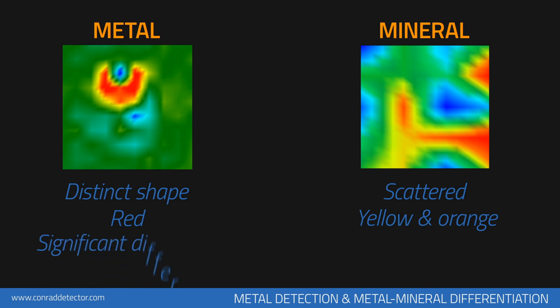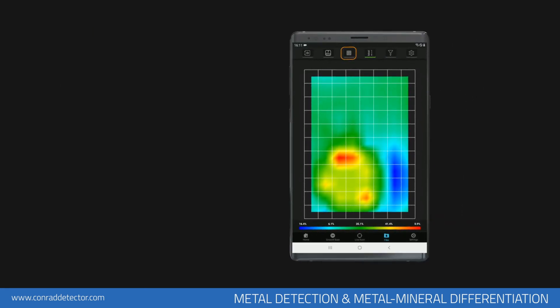The most important characteristic that separates metallic objects from minerals is the numerical difference in data between it and the soil. To see these numerical values, click on the data icon in your application. Gridlines and the numerical values will appear on the graphic. There must be at least 15 units of increase on the graphic between the soil shown in green and metallic objects shown in red.